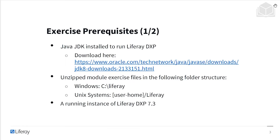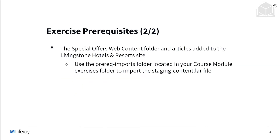If you're following along with the exercises, we have some prerequisites. Make sure to have Java JDK installed to run Liferay DXP — you can download that here. When it comes to unzipping your exercise files, make sure that they look like this. On Windows, do C slash Liferay; if you're on a Unix system, you'll do the user home slash Liferay. You'll also want to have a running instance of Liferay DXP 7.3, and to have everything reflect what we're showing here, make sure you import the staging-content LAR file.